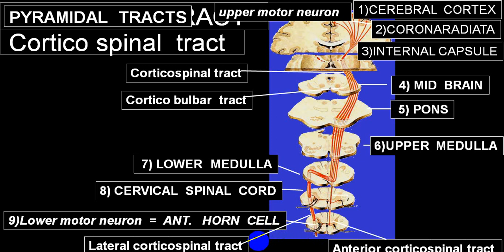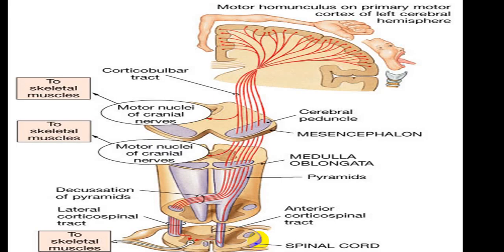The lateral corticospinal tract carries 90 percent of fibers that have already crossed at the lower medulla. The anterior corticospinal tract carries the 10 percent that remained on the same side in the spinal cord, but these cross to the opposite side in the anterior commissure before ending in the anterior horn cell. So 100 percent of fibers have crossed to the opposite side before they end in the anterior horn cell.